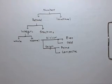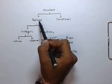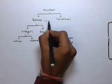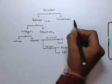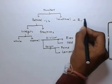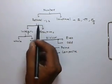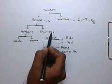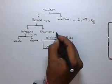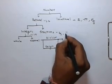Finally, we can draw a number tree. Numbers can be divided into rational and irrational numbers. Examples of rational numbers are 1, 2, etc. While irrational numbers include root 2, root 7, root 2 by 3, etc. Rational numbers can be classified into integers and fractions. Integers are -1, 1, 0, etc., while fractions are 2 by 3, 11 by 5, etc.